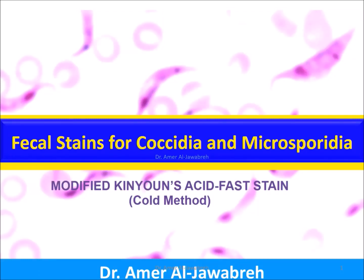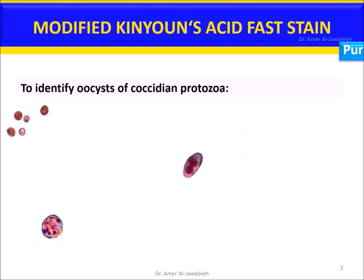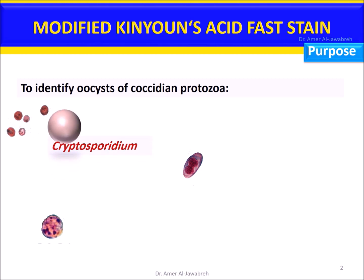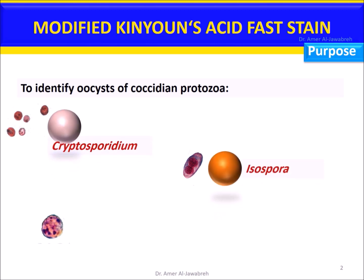Fecal stains for Coccidia and Microsporidium: Modified Kinyoun acid-fast stain. Cold method. Purpose: to identify oocysts of Coccidian protozoa, such as Cryptosporidium species, Isospora species, and Cyclospora species.